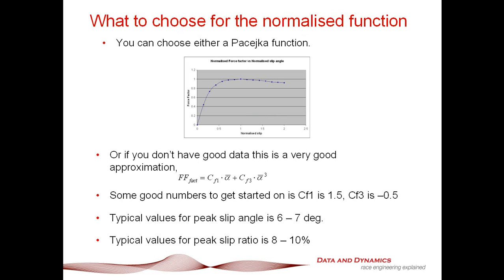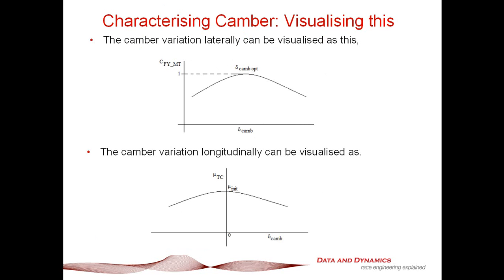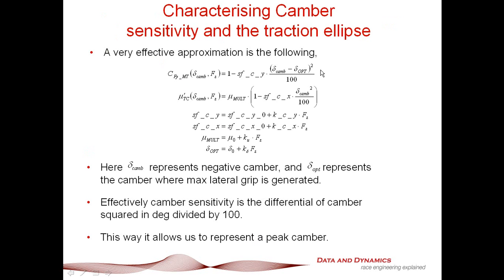Remember, for choosing the normalized slip function, you can either choose the Pacejka function or you can use the ChassisSim normalized slip angle curve approximation — whatever you choose is up to you. And lastly, characterizing our camber traction ellipse: to visualize that, we've got this function. If you do need to tune in the traction circle ellipse, that's where our mu-init comes in. Some rough rules of thumb: mu-init will basically dictate where to go in terms of what the traction circle ellipse looks like. The SFCY and SFCX dictate just how sensitive these things are going to be to camber.